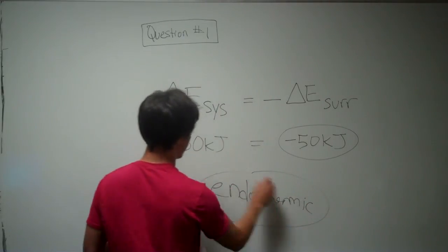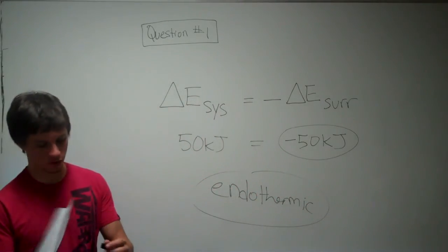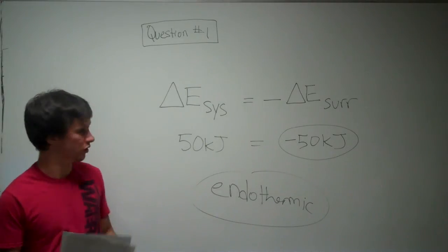So the correct answer is negative 50 kilojoules and endothermic, which corresponds to choice number two on your test.